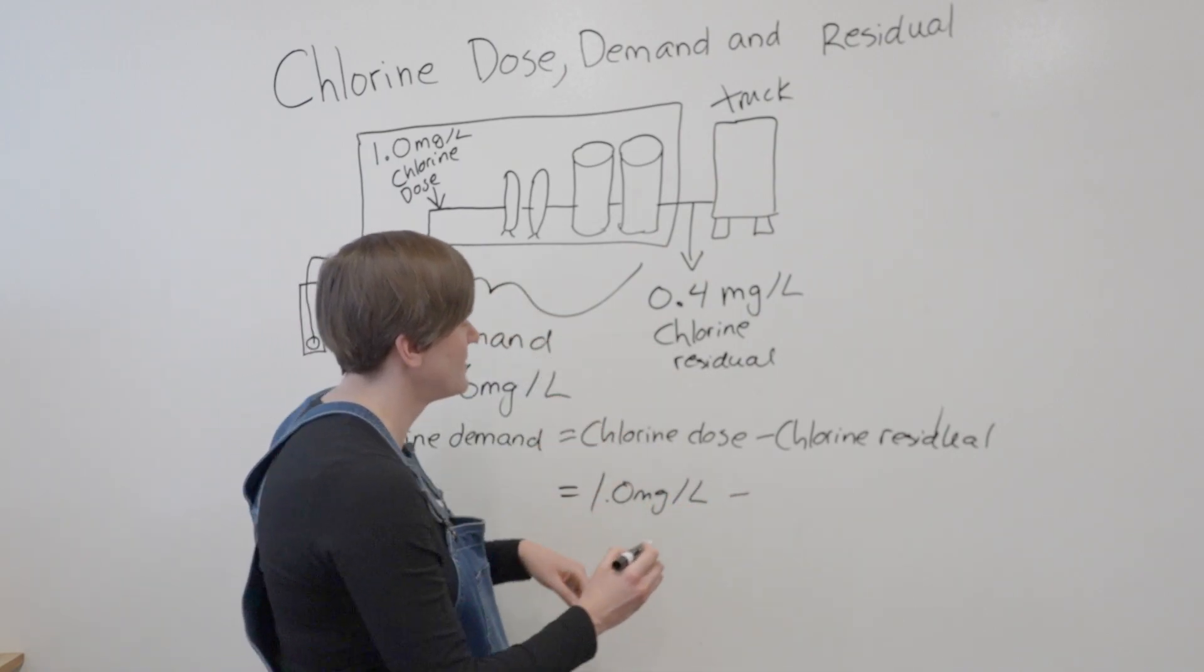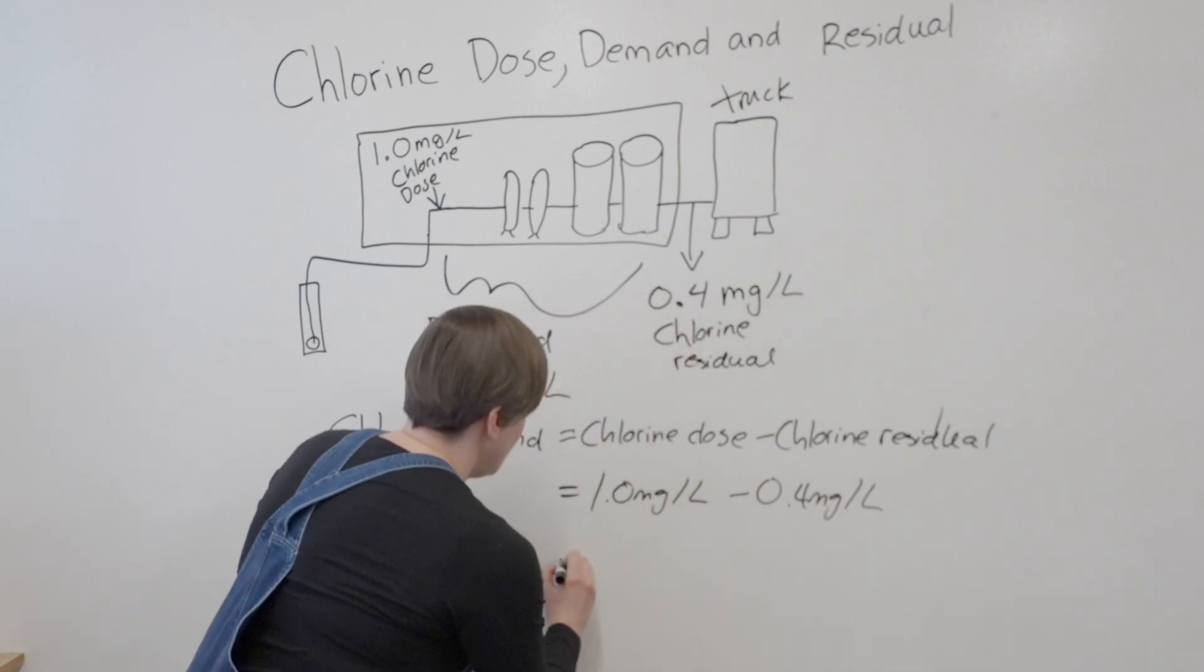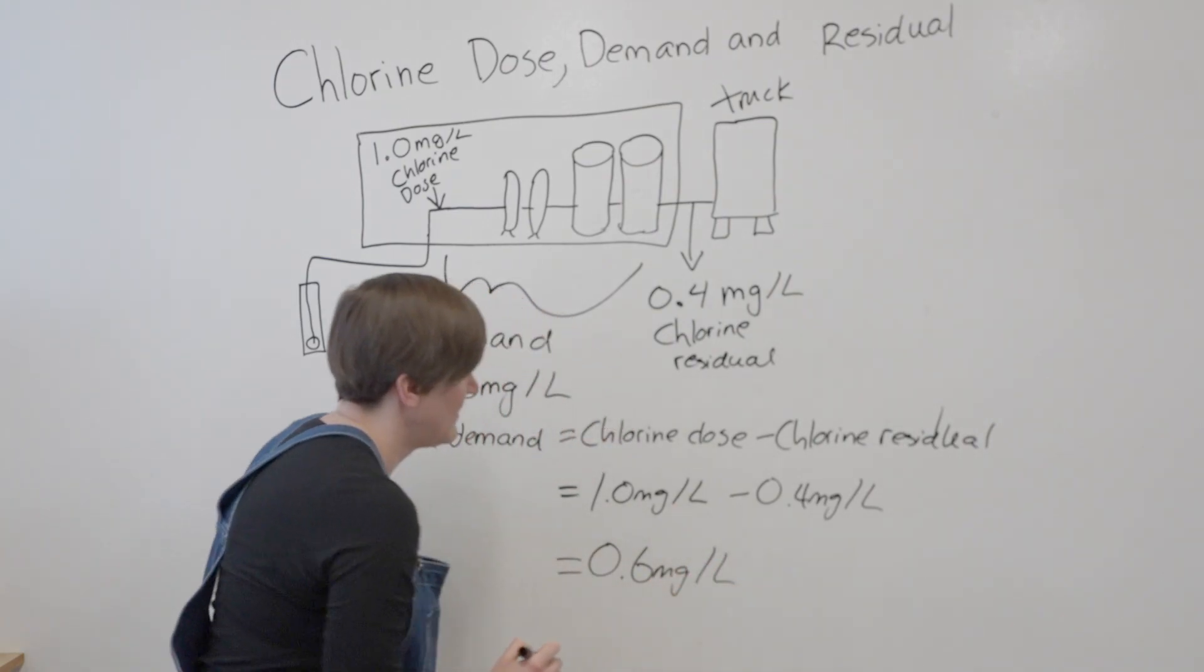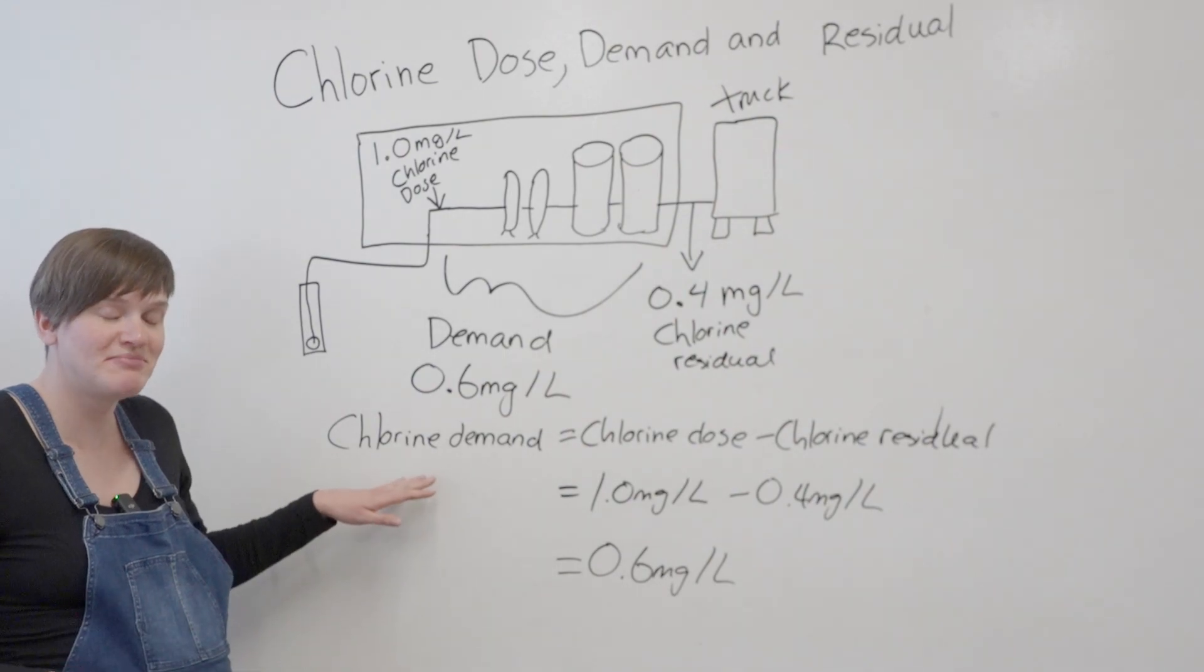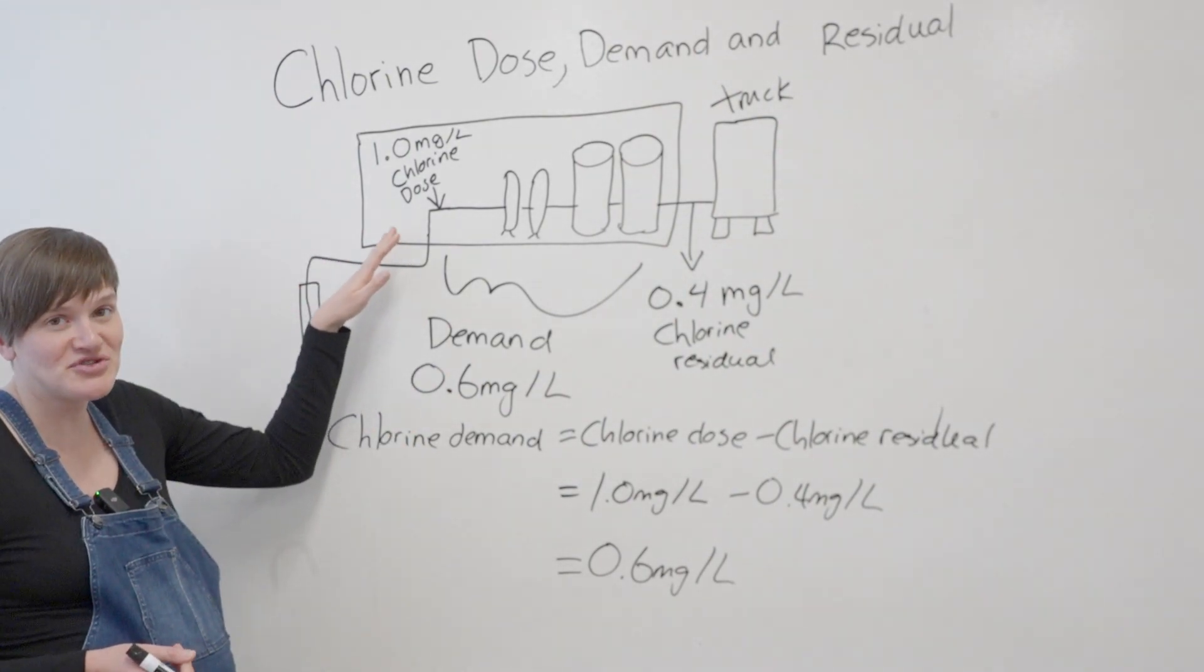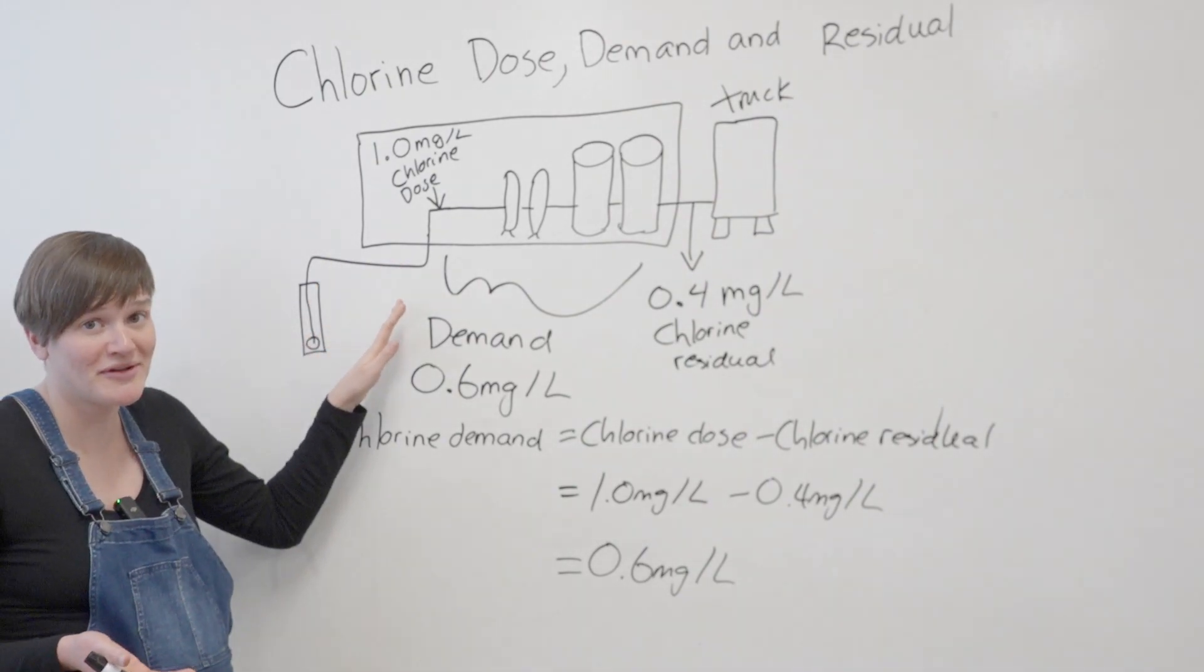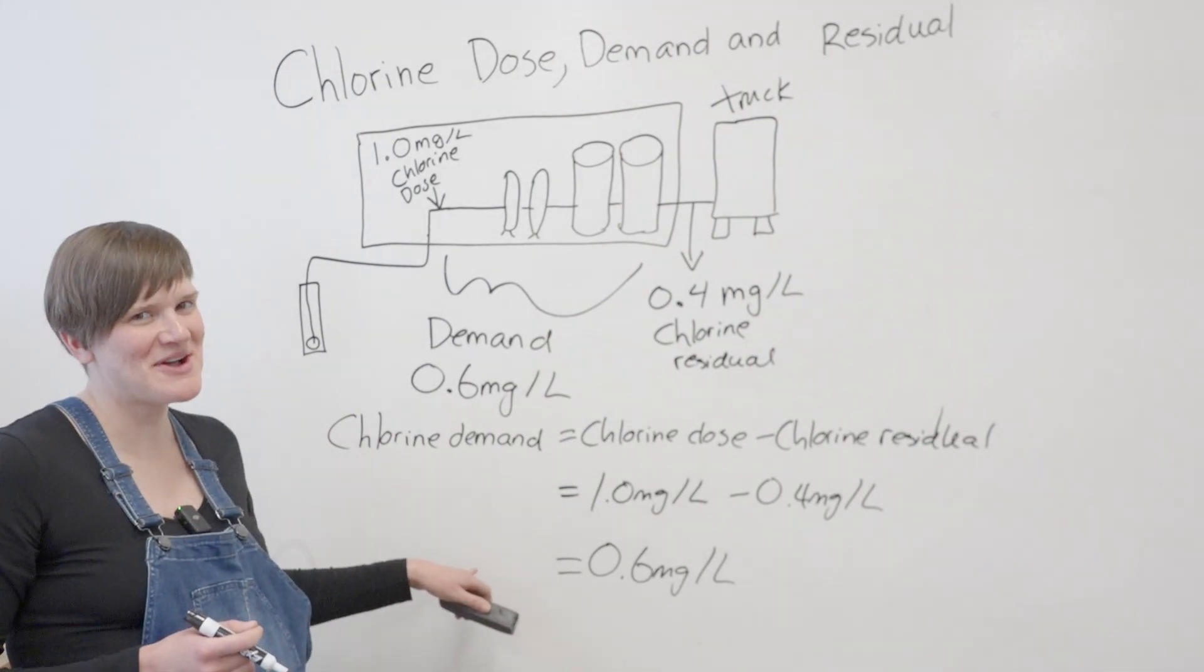And I subtracted the chlorine residual, which is 0.4 milligrams per liter, and I got 0.6 milligrams per liter. So if you like thinking about the formula and you want to memorize the formula and use it, that's great. But if a more visual representation will help you more on an exam, you can always do a little sketch on the exam like this as well. This is how we calculate demand.